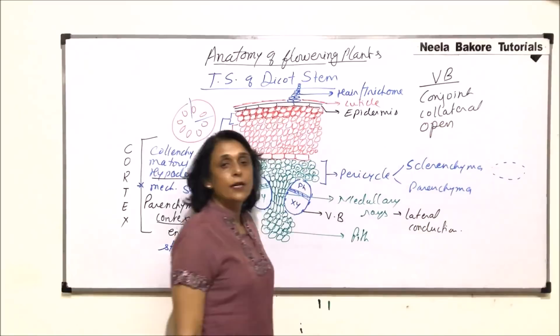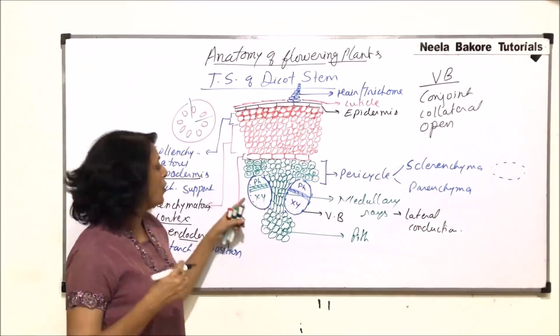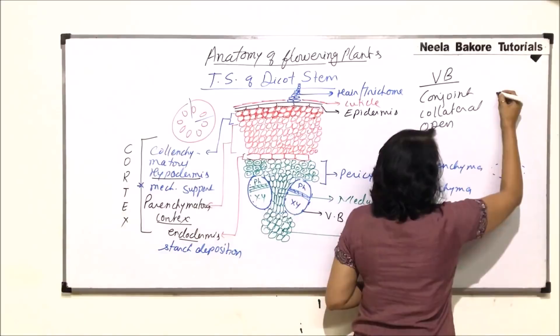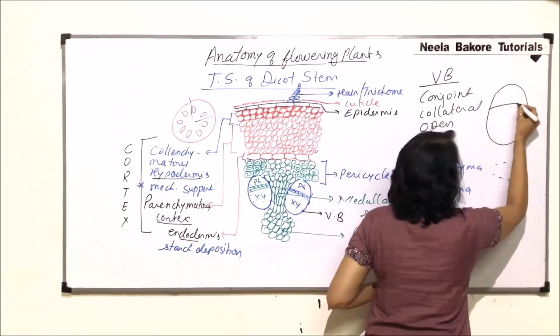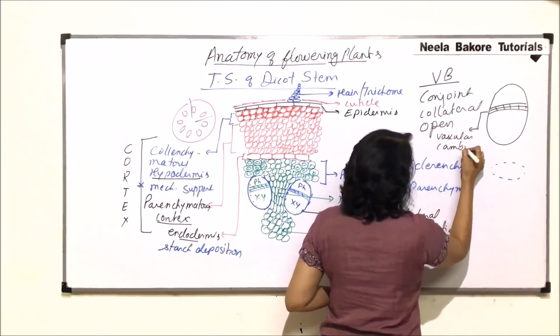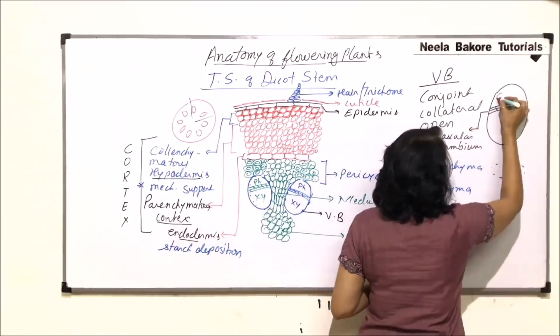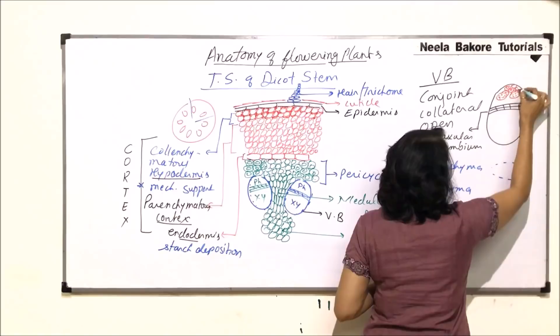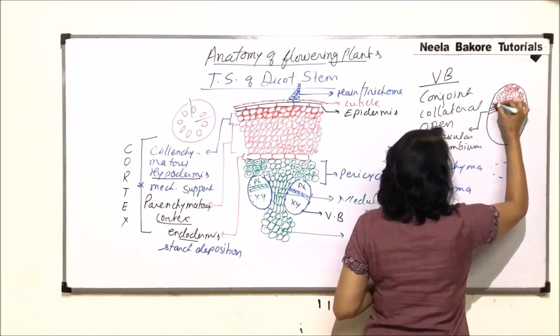In the case of dicot stem, the vascular bundle is conjoint, collateral, and open. Conjoint means xylem and phloem are on the same radius. Collateral means phloem is on the outer side and xylem on the inner side. Open means they have cambium — the vascular cambium. In the vascular bundle, the meristematic part is the cambium, and the outer side has phloem, showing sieve tubes with companion cells, phloem parenchyma, and phloem fibers.